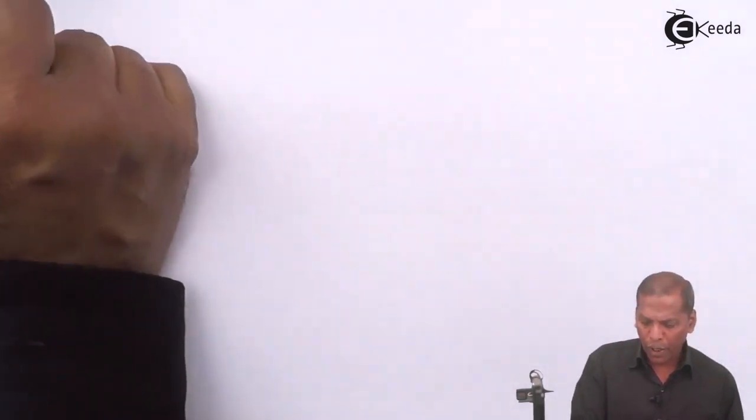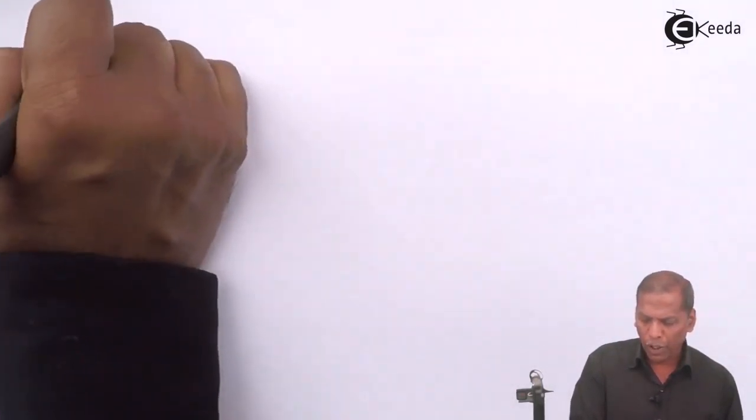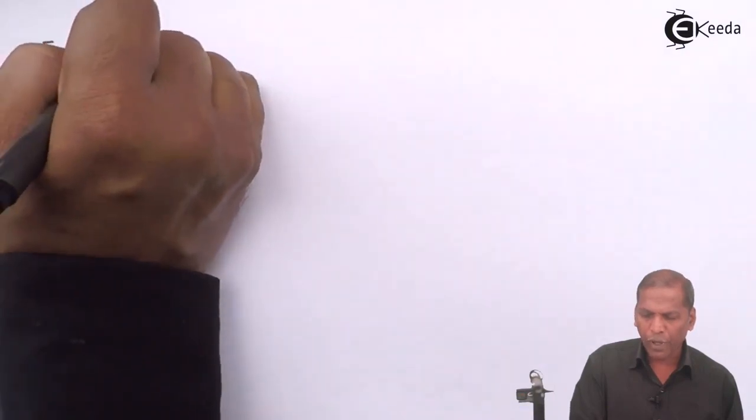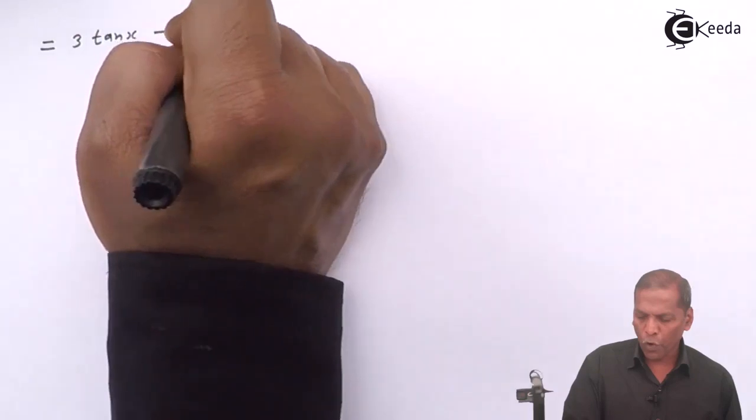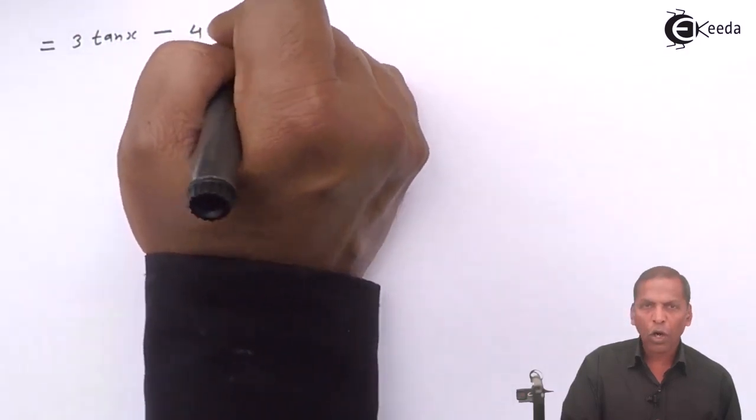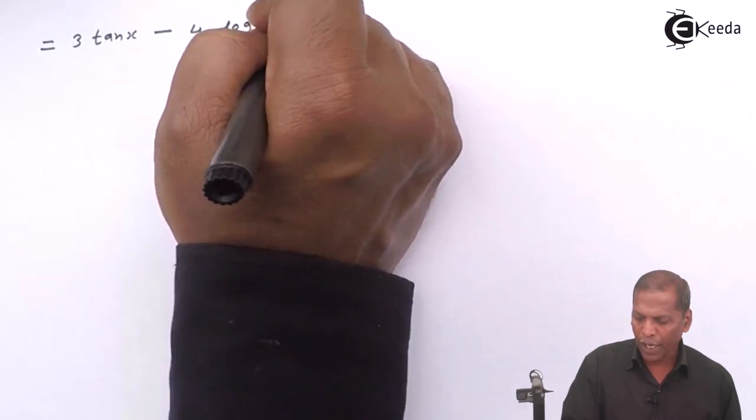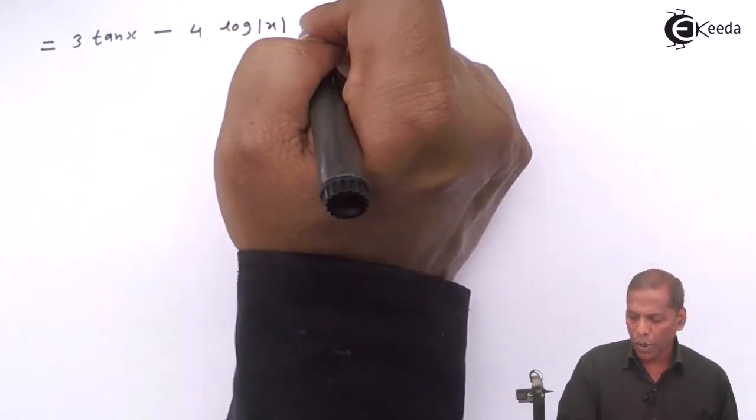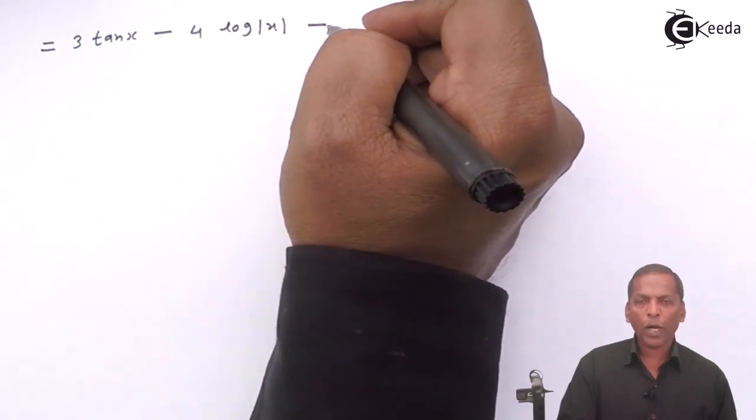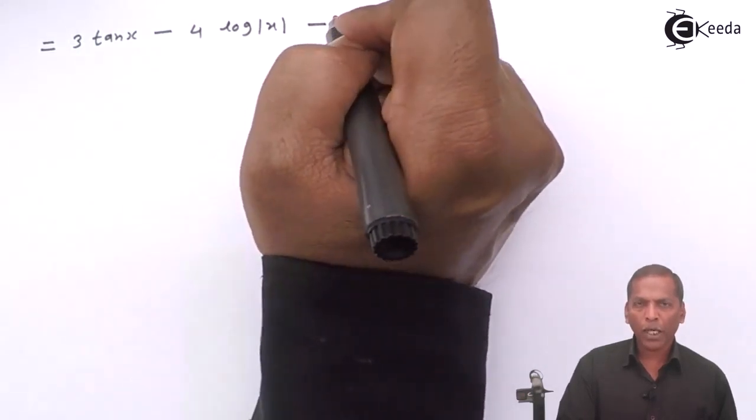Therefore, the next step will be is equal to 3 tan x, we write as it is. Then minus 4 times log of mod x. Also, we write as it is. Then plus minus gives minus.